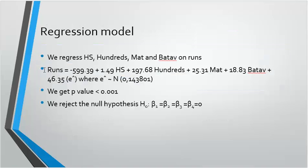Next we regress high score, hundreds, matches and batting average on runs. We get the model as shown. Depending on the p-values, we reject the null hypothesis and say that these variables are significantly different.